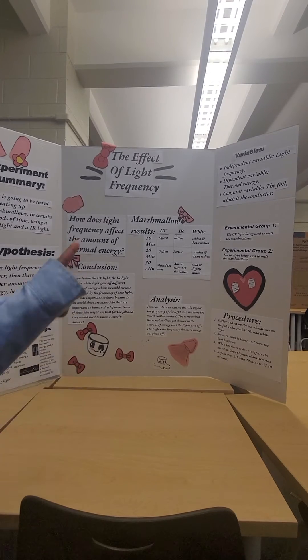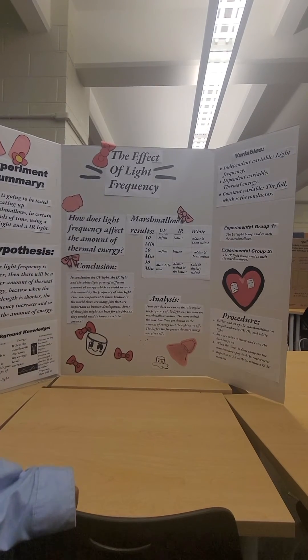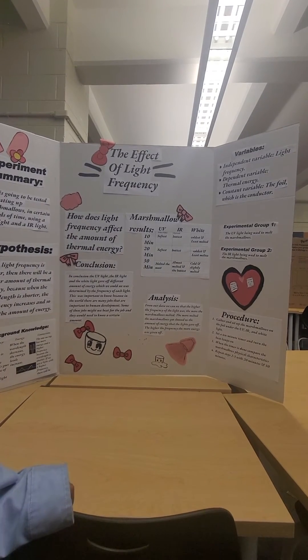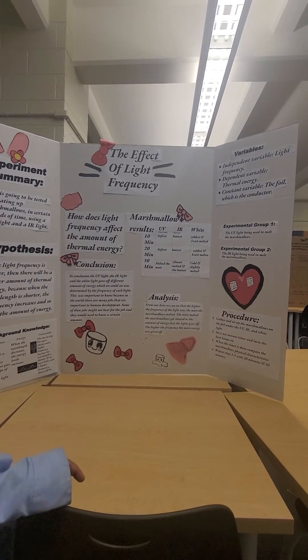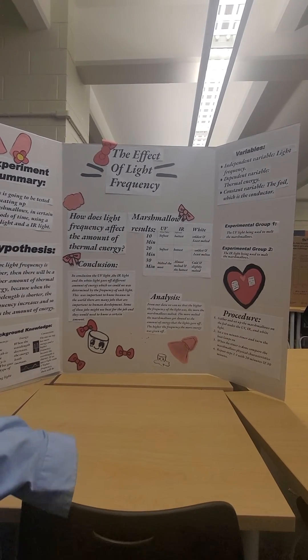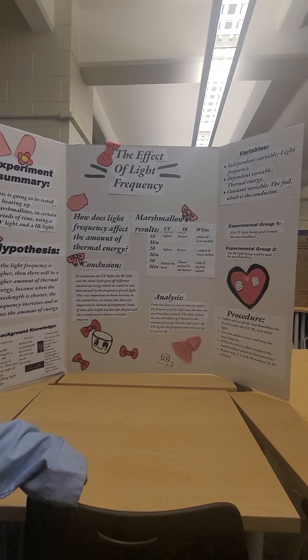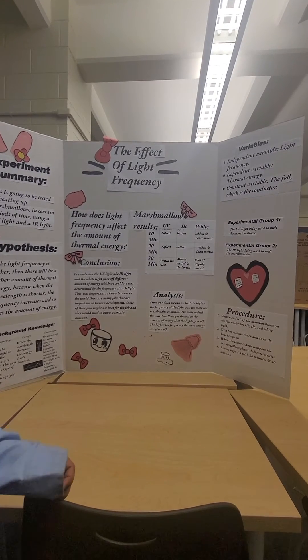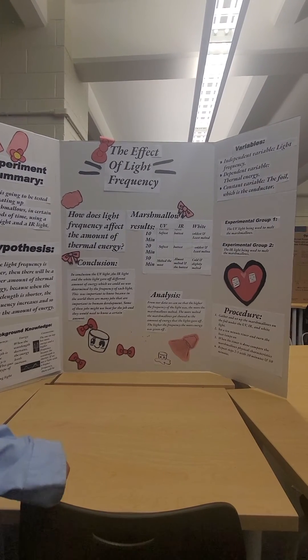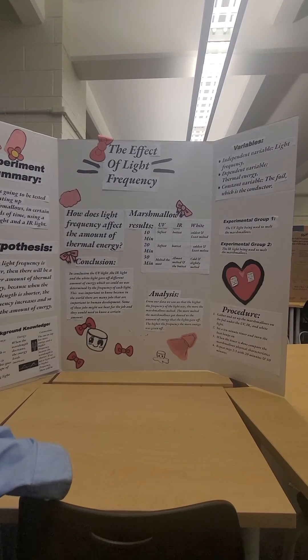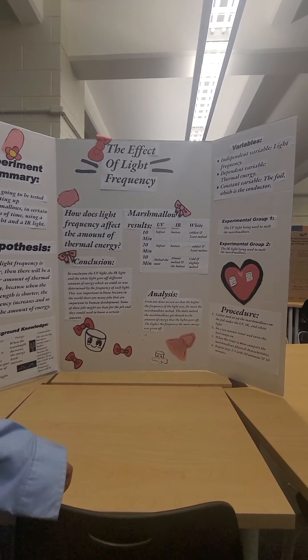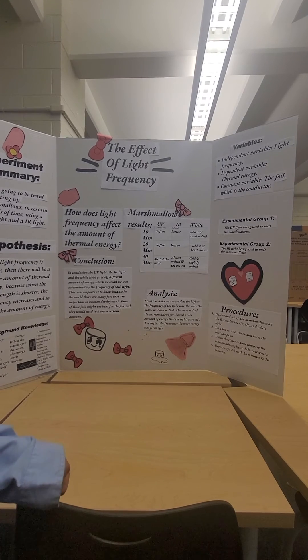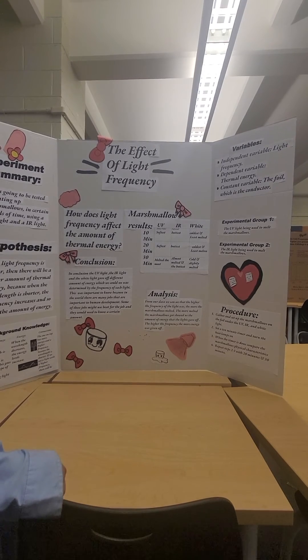The independent variable was the light frequencies that we were changing — what we were testing for. The dependent variable was the thermal energy. The constant variable was the foil, which is the conductor.